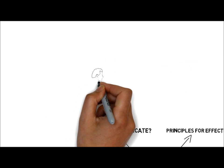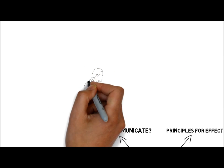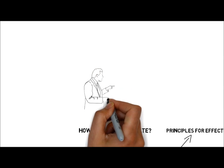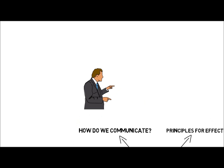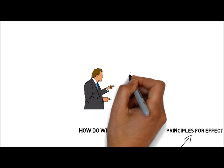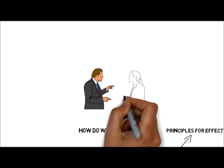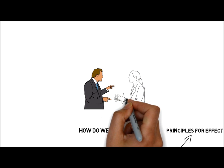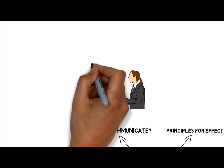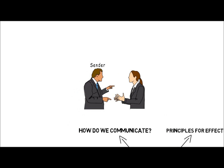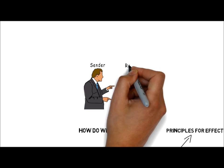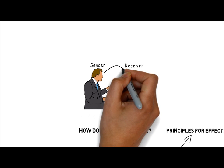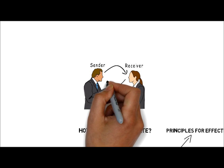Let's talk about communication. There are many models that have been developed since the 1960s to illustrate how we communicate. The basic premise in most of the models is that there are four elements to communication: the sender of the message, the receiver of the message, the message itself, and a feedback loop.